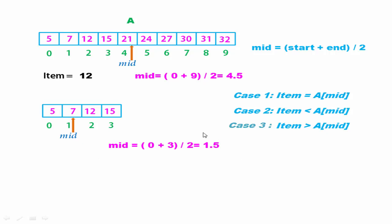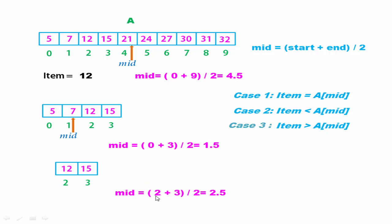Now we check the 3 conditions. Is 12 equal to 7? No, it is false. Is 12 less than 7? No, it is also false. Is 12 greater than 7? Yes, it is true. So we discard the elements at index 0 and 1. After discarding, our reduced search base is this. Now we find the middle element: mid = (2 + 3) / 2 = 2.5. We take the integer part, so the middle element is at index 2. Now we compare the item with the element at index 2. Yes, the item is present here, and the search is successful.